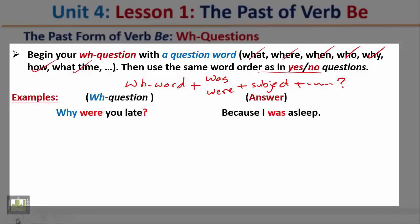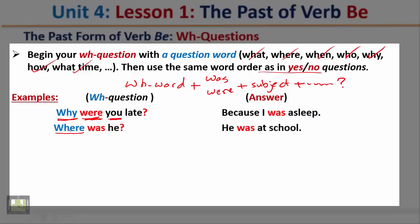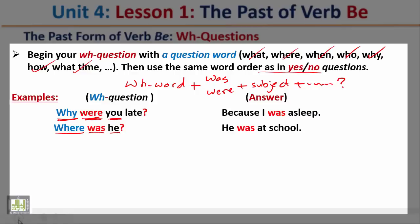Examples: 'Why were you late?' The WH question starts with the question word, then the verb, then the subject. The answer: because I was asleep. 'Where was he?' We start with the question word, then the verb, then the subject. The answer: he was at school.